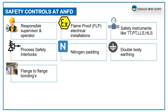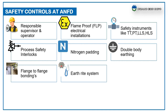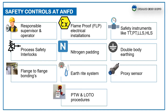An airtight system is provided for bags to monitor the earthing continuity. A proximity sensor to the discharge manhole to avoid rotating hazard. Permit to work and LOTO procedures to be followed in the process to control high-risk and hazardous energy sources activities.